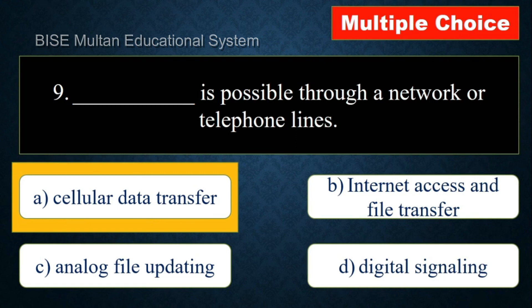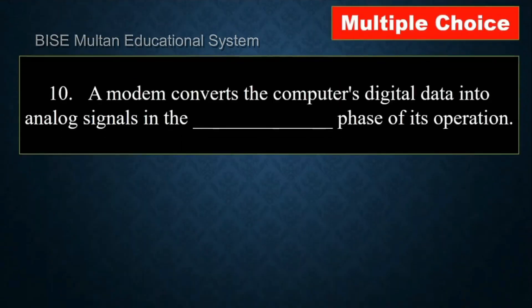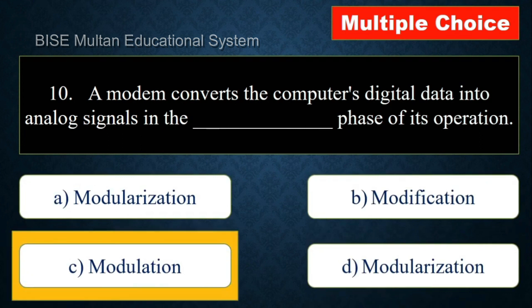Question number 10: A modem converts the computer's digital data into analog signals in the dash phase of its operation. The answer is modulation.